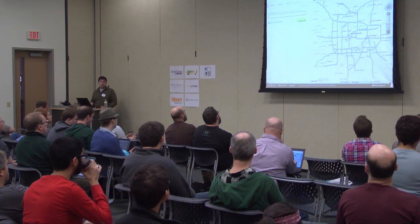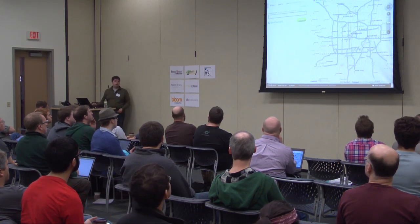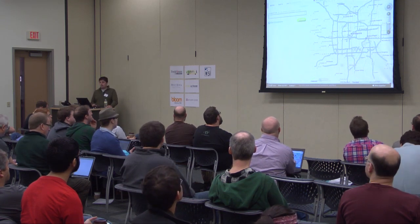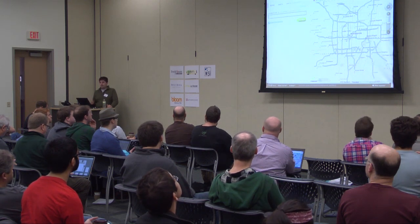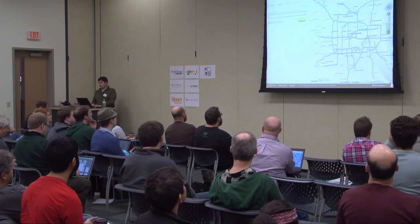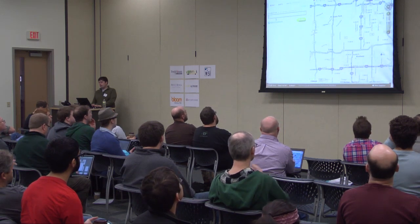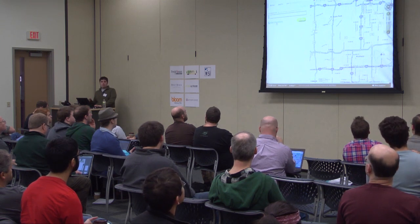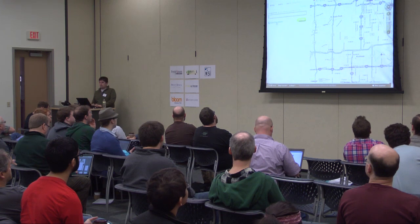MapQuest is probably one of the more popular ones. Last year they started using OSM data in their open product. They have tiles that you can use with basically no limit, and they look pretty good too. They have a search, they have a directions thing. So open.mapquest.com is a lot more like maps.google.com, but it uses OpenStreetMap data.